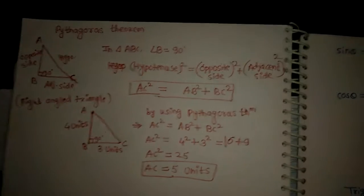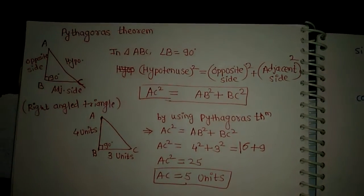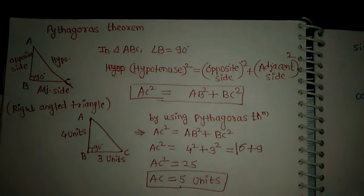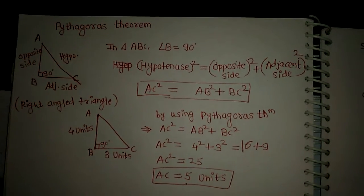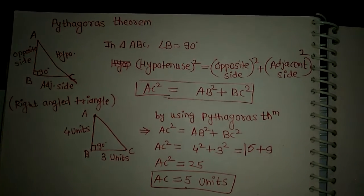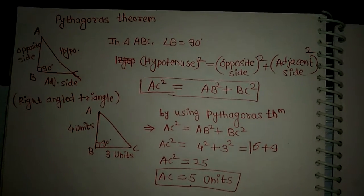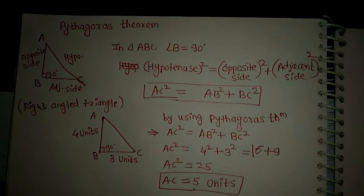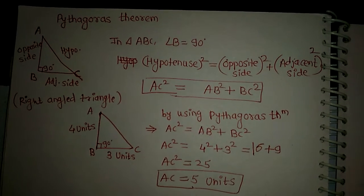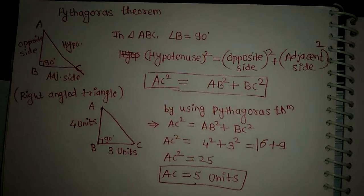So we have found the hypotenuse of the triangle using Pythagoras theorem. Got it? Thank you. Please subscribe to my channel, like and share. Thank you.